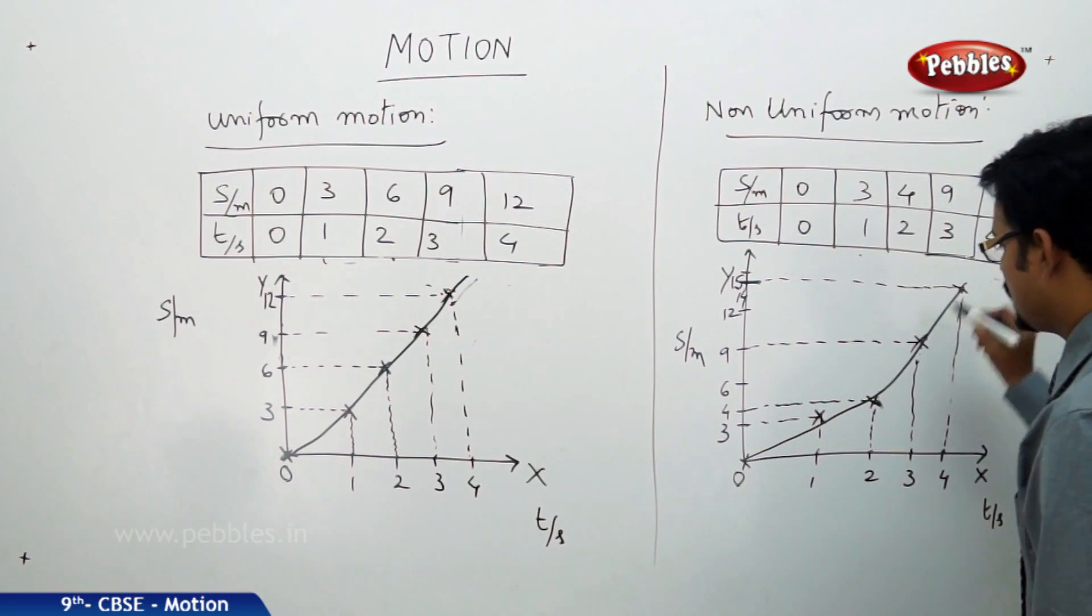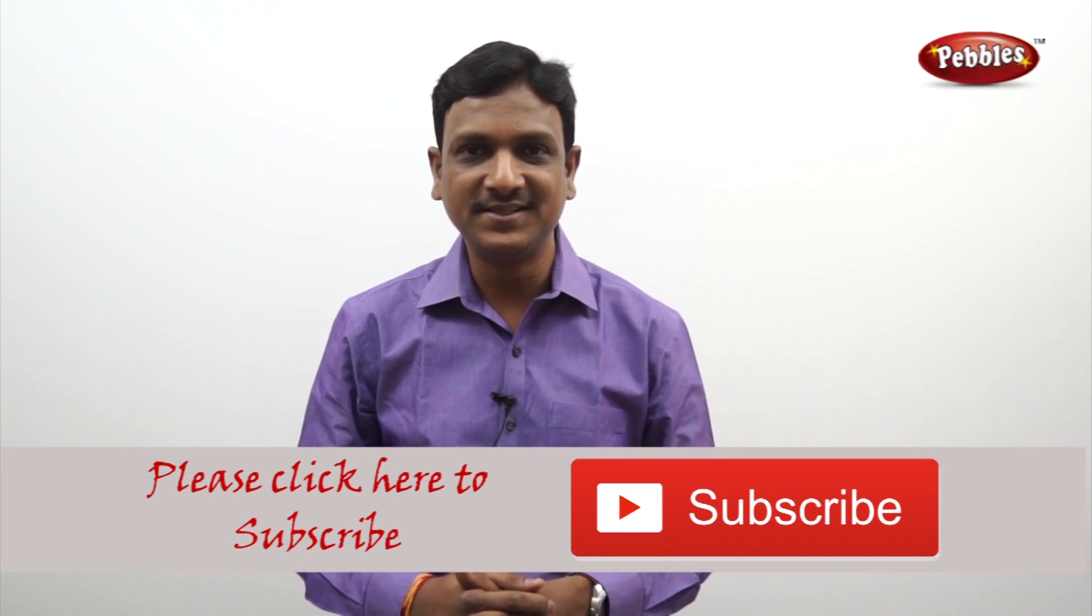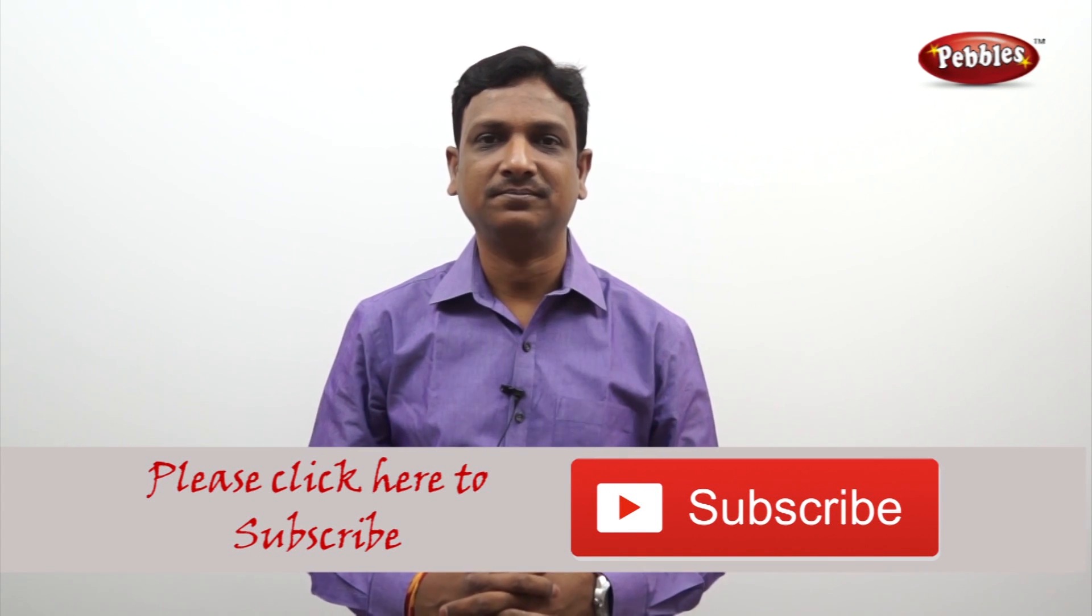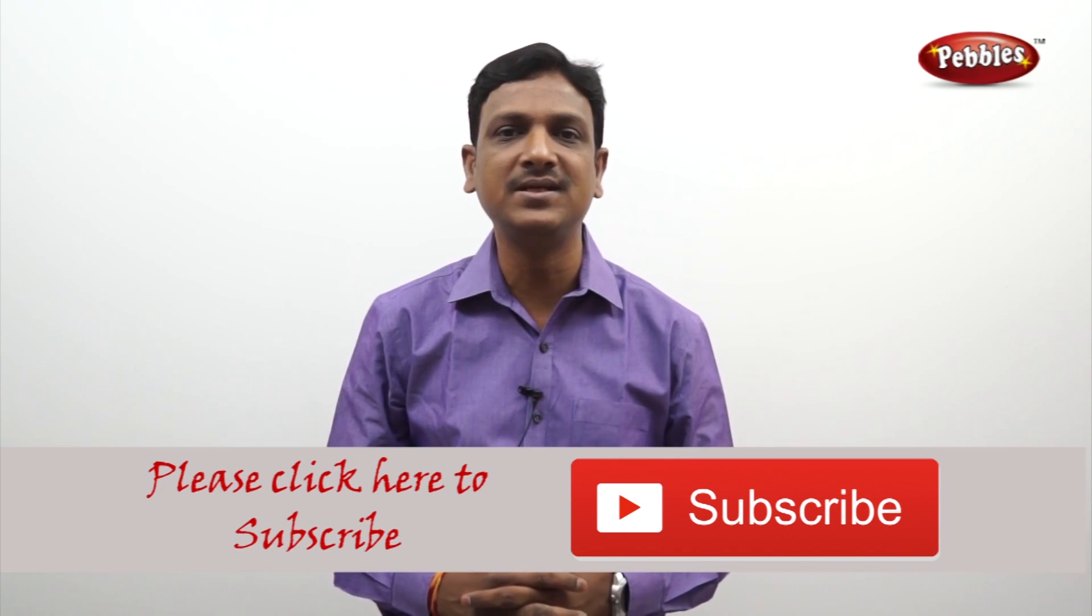Now, this time, you are not getting a straight line. You are getting a curve. That means, in a distance time graph, whenever you see a curve, it is obviously a non-uniform motion. If you like this video, please give a thumbs up. Please subscribe to our channel to get more videos on CBSE syllabus.